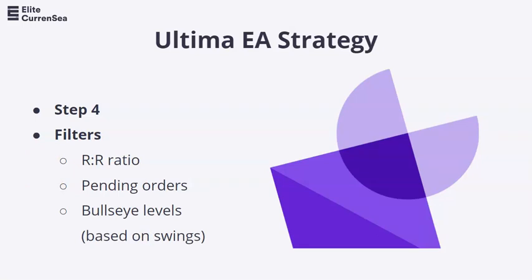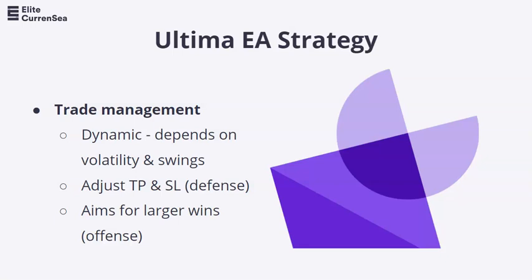We're looking for breakouts, but we're not entering with the breakout right away. Step four is filters: we have reward-to-risk ratios, we're looking at pending orders, and we're looking at Bullseye levels based on the price swings — that's the difference between the breakout and the entries. And then trade management — last but not least, it's dynamic. Depending on the volatility and the price swings, it will adjust the TP and the stop loss. That is why it works so well from a defensive point of view, but on an offensive note, it's also able to aim for pretty nice, larger wins at times. This 100% rules-based strategy really shows a nice mix of defense and offense.